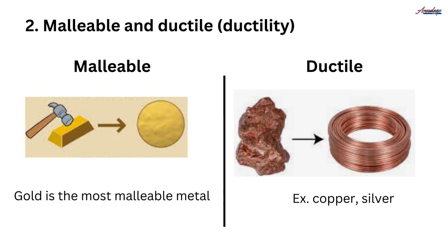Now, what is ductile or ductility? It is the property of metal in which it can be drawn or stretched into wire without breaking. Jis se hum us metal ko kheechen, stretch karenge, pull karenge, toh woh wire mein convert hota hai without breaking. For example, silver, copper, and gold are ductile metals.